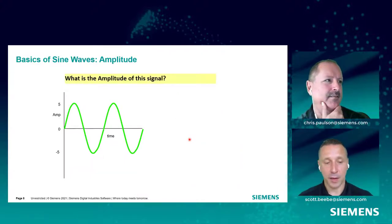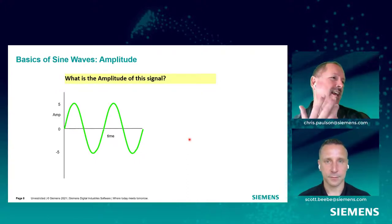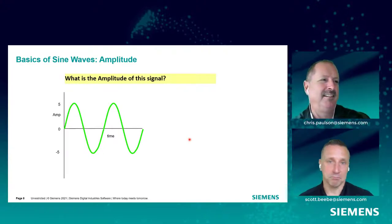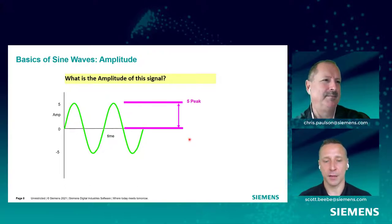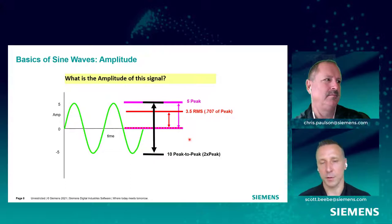Now that we've talked about amplitude, if I were to ask you what the amplitude of this signal is, what would your answer be? I would say 10. Well, if you said 10, I could agree with that. But I might want to say 5. Technically we're both right: an amplitude of 5 represents a peak value, an amplitude of 10 would be peak to peak. There's even a third way — the RMS value, which is 0.707 of the peak, or 3.5. All three answers are correct. We just want to be on the same page when talking about signal amplitudes.